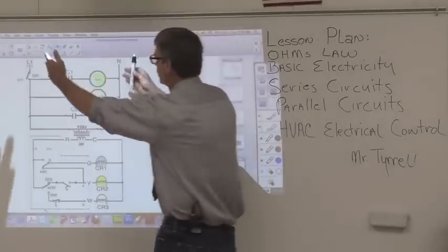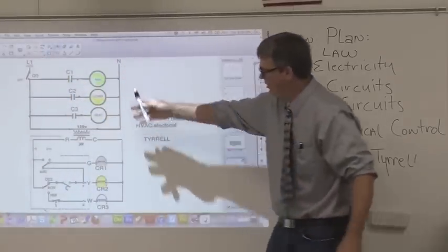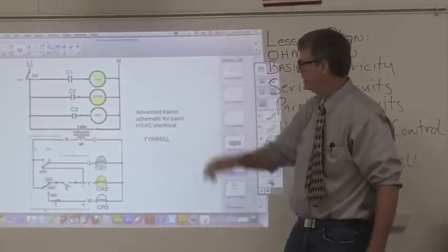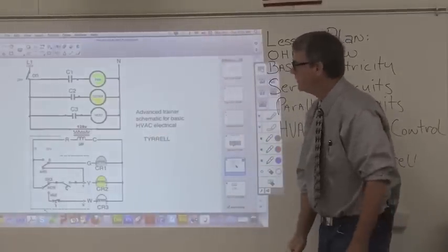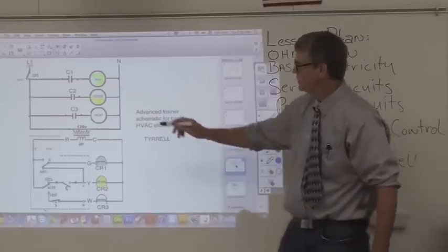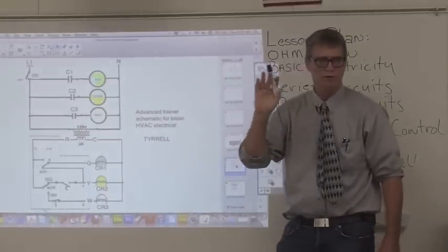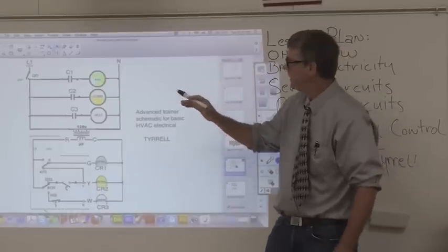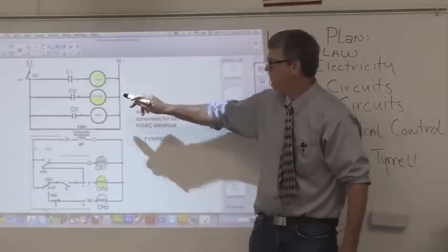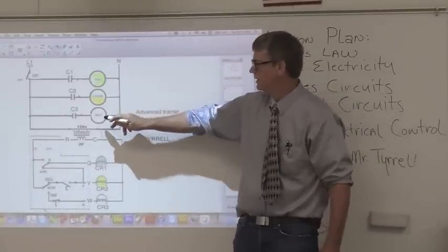Everything flows from the beginning down, and it shows all the components in the order that they are connected. So what we do here is take three resistors or three lights — we're going to call the first one a fan, the second one the condenser, and the third one the heat.